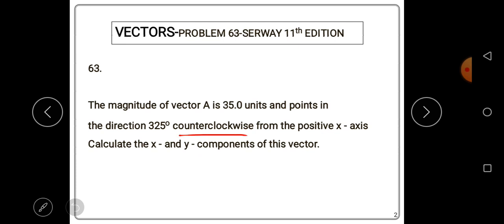Clockwise means moving in the direction like the way a clock moves. Counterclockwise is the opposite direction. In short, counterclockwise is the same as anti-clockwise.